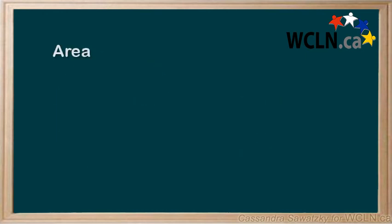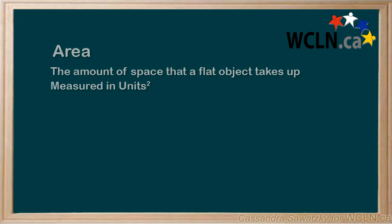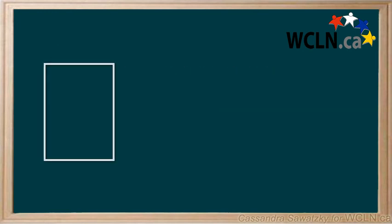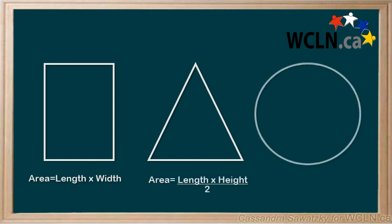In this tutorial, we found that area is a way to measure the amount of space that an object takes up, and it's measured in units squared. We can use equations to find the area for different shapes. For a rectangle, the equation is area equals length times width. For a triangle, the equation is area equals length times height divided by 2. And lastly, for a circle, the equation is area equals pi times r squared.